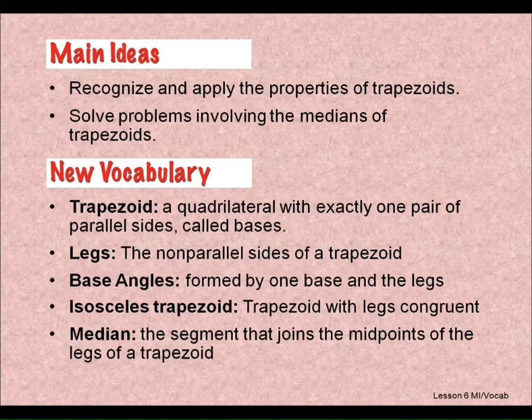Then we have a special type of trapezoid, which is called an isosceles trapezoid. That's a trapezoid where the legs are congruent. So the sides that are not parallel, when they are congruent, this is called an isosceles trapezoid. Just like an isosceles triangle, you have two sides congruent. In an isosceles trapezoid, you have two sides congruent, but it's the legs.